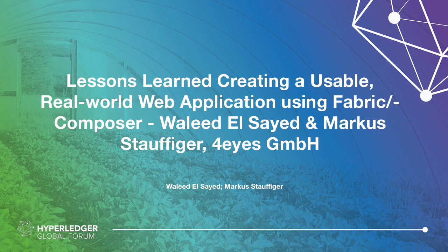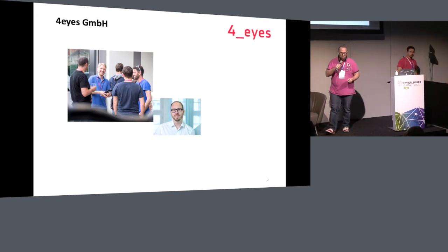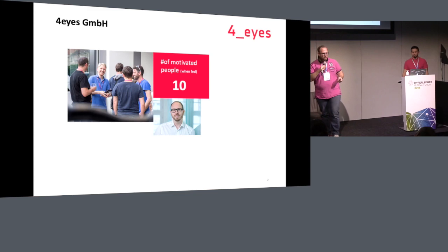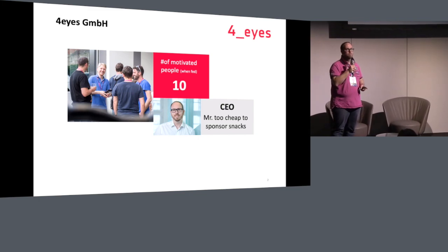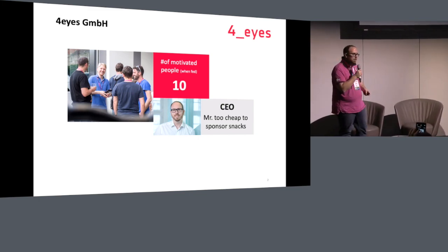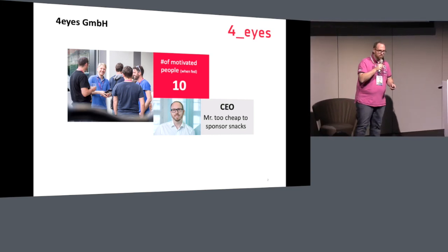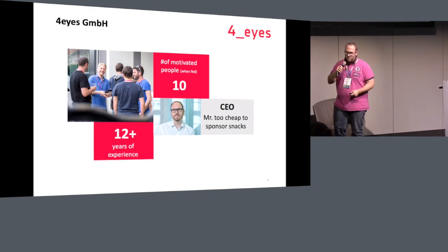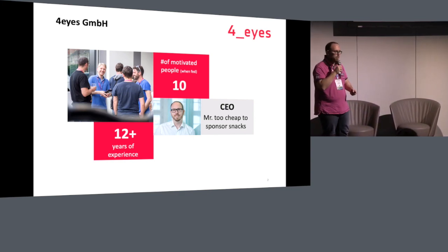Hi there, we're here to talk about what we did in our company with Fabric and Composer. We're called Four Eyes, we are ten people — very motivated but only when fed. Our CEO is too cheap to sponsor snacks, so ideally we had to come up with a blockchain solution, because that's the obvious choice. Our company has existed for more than 12 years doing other things than blockchain.